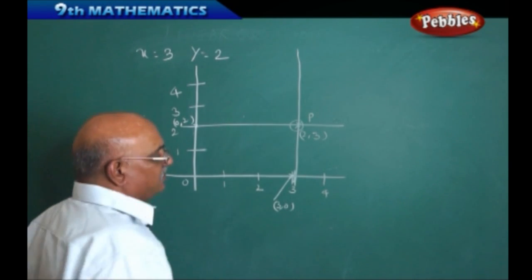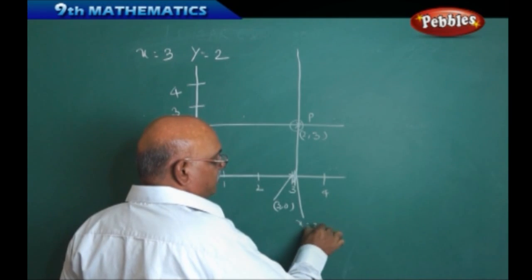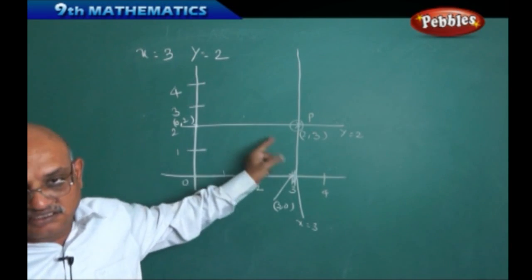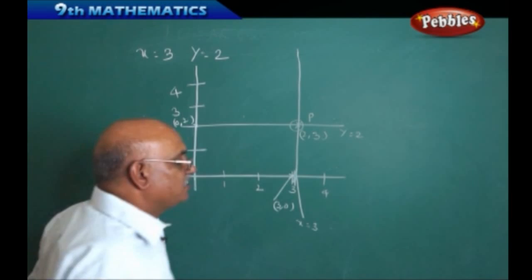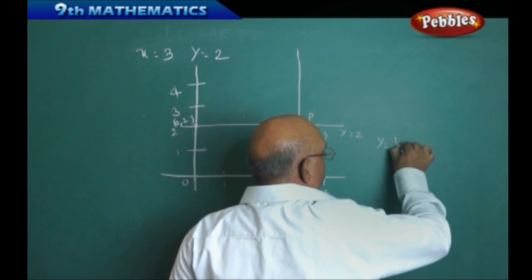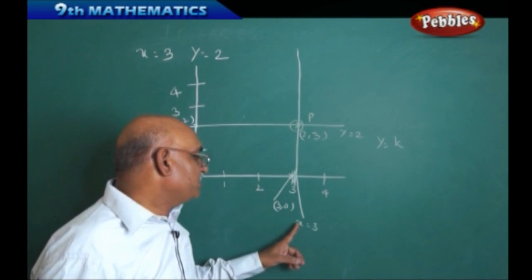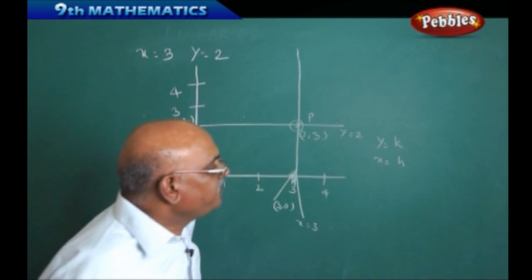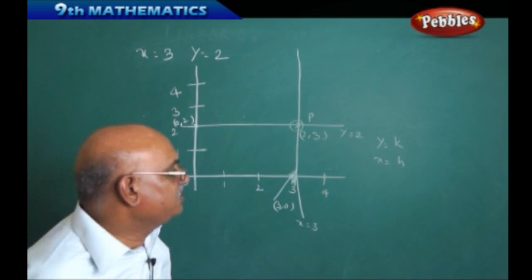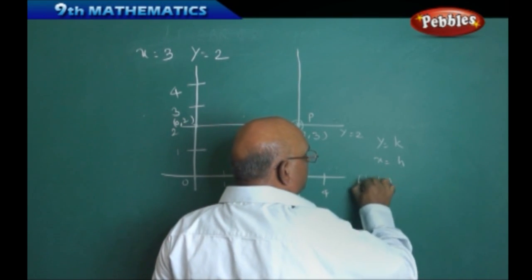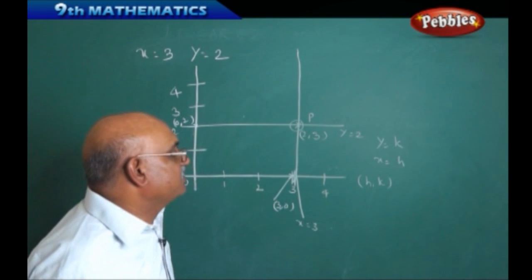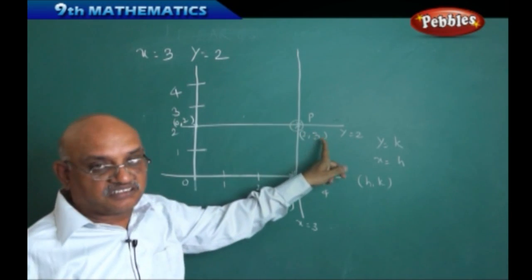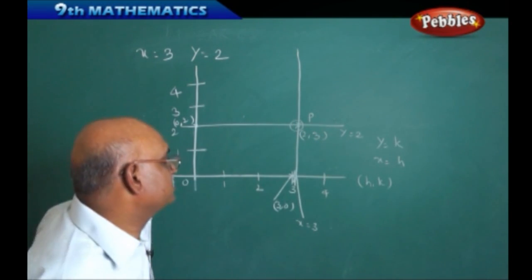In general, the equation y = 3 or y = 2 represents a line parallel to the x-axis, expressed as y = k. Similarly, a line parallel to the y-axis is expressed as x = h. The point of intersection of both lines is (h, k). Therefore, the solution for x = 3 and y = 2 is the point (2, 3).